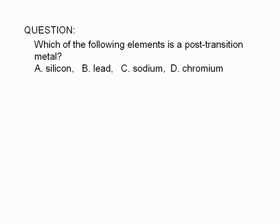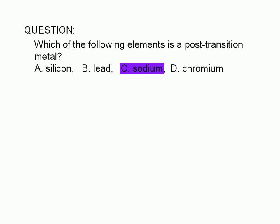Which of the following elements is a post-transition metal? A. Silicon, B. Lead, C. Sodium, or D. Chromium.